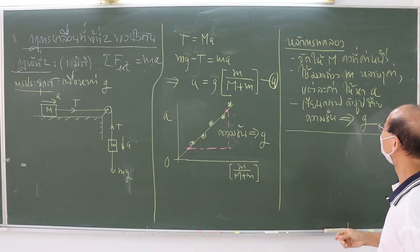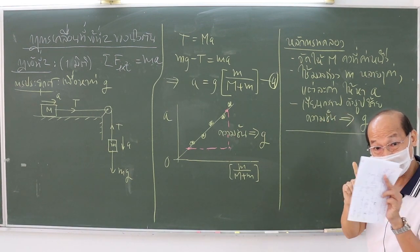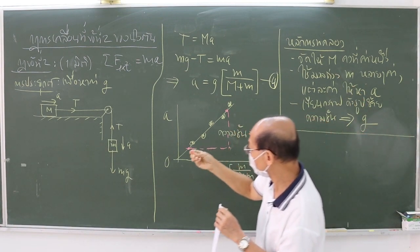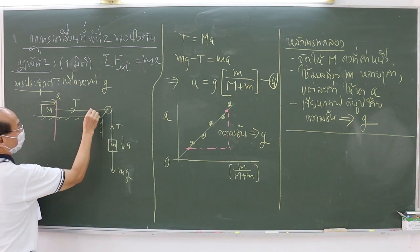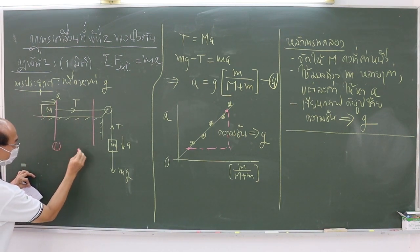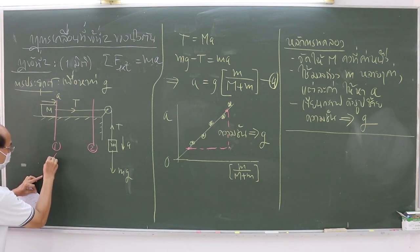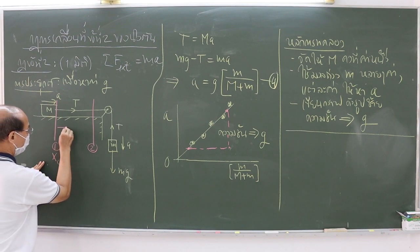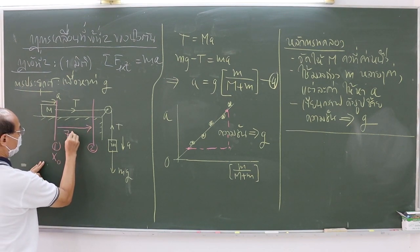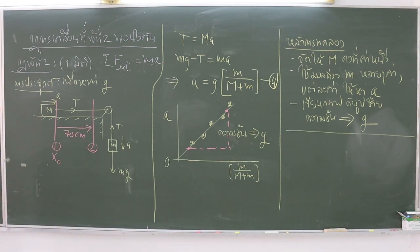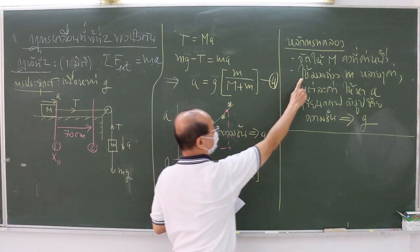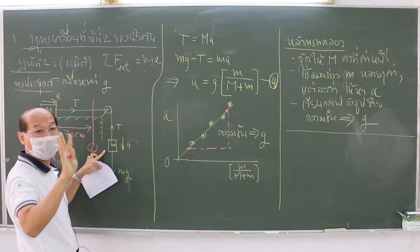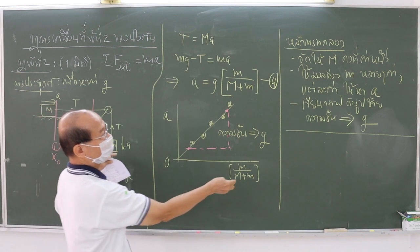I'd like to spend a few minutes to summarize the method of this experiment. We let the object of mass capital M move from rest at position 1 to position 2. Position 1 is at X naught. The mass capital M moves a distance of 70 cm from position 1 to position 2. We use the hanging mass m with 4 to 5 different values, and for each value of the hanging mass we must measure the corresponding acceleration A of the system.